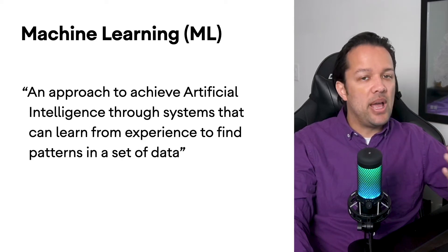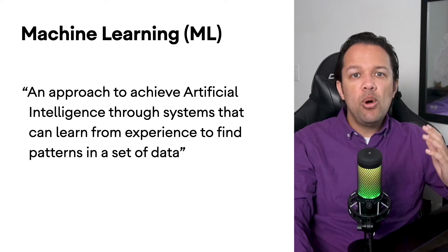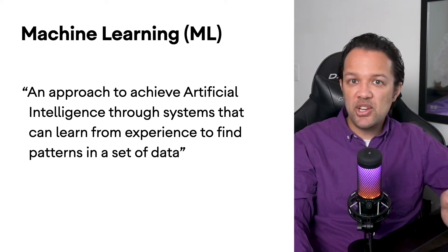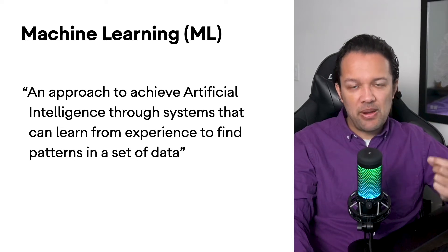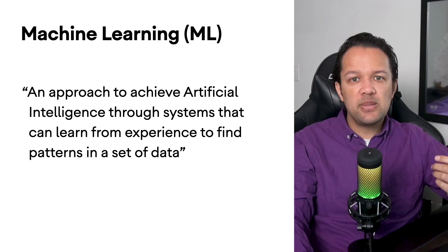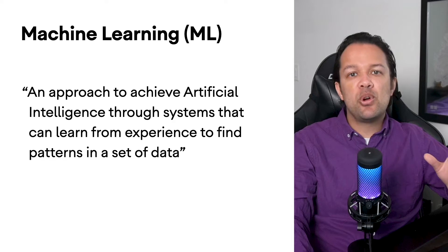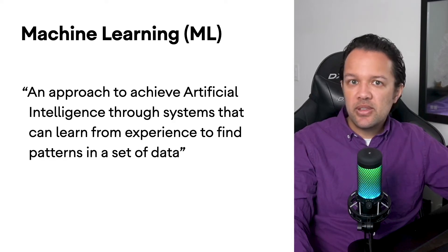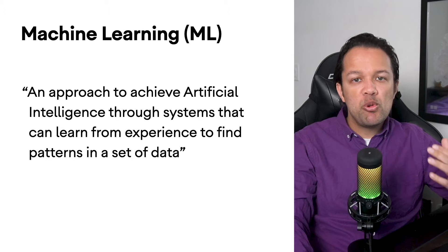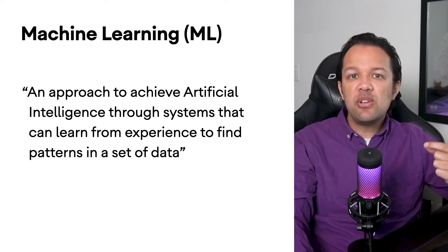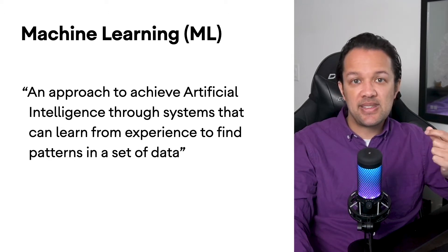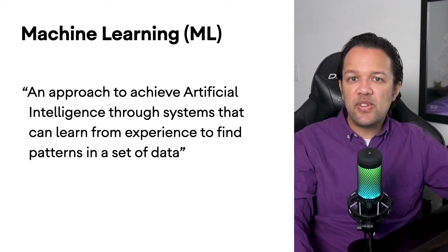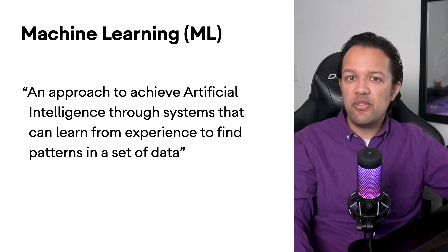So what about machine learning, or ML for short? Machine learning is an approach to achieve artificial intelligence. It is the actual program that runs and can learn from prior experience to find patterns in a given set of data. What makes these machine learning programs so powerful is that they can be reused and trained with new data without changing the code itself. So if I create a machine learning system that recognizes cats, I can use the same code without modification to then recognize dogs, just by feeding it different training images.